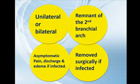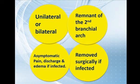If infected, it should be treated with antibiotics. This condition can be unilateral or bilateral. It is usually a remnant of the second branchial arch. It is usually asymptomatic — the patient can be born with it and die without any complaint. If it becomes infected, it should be treated and then removed surgically.